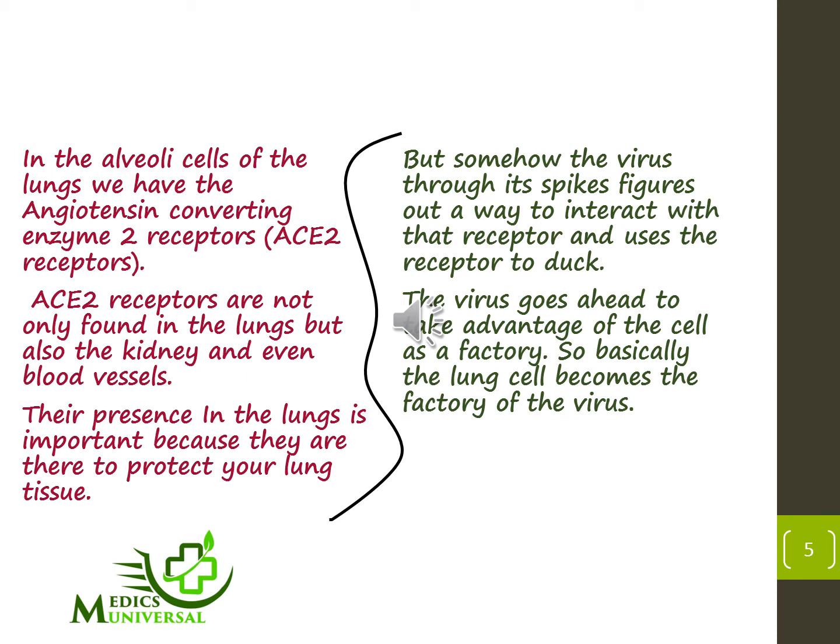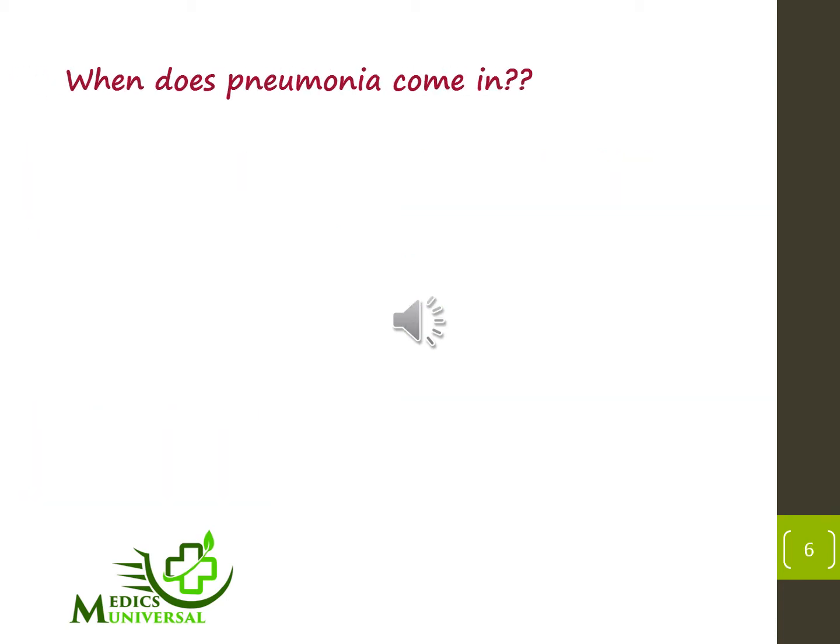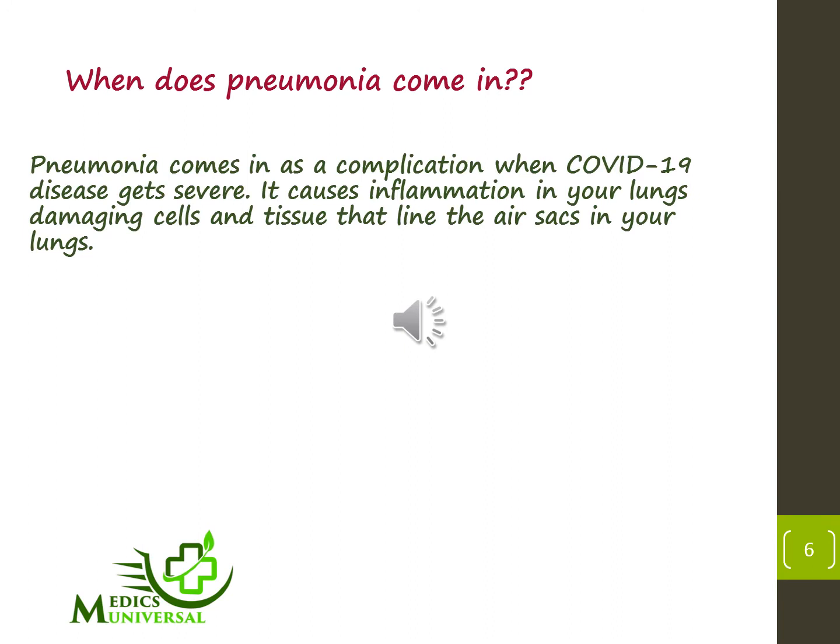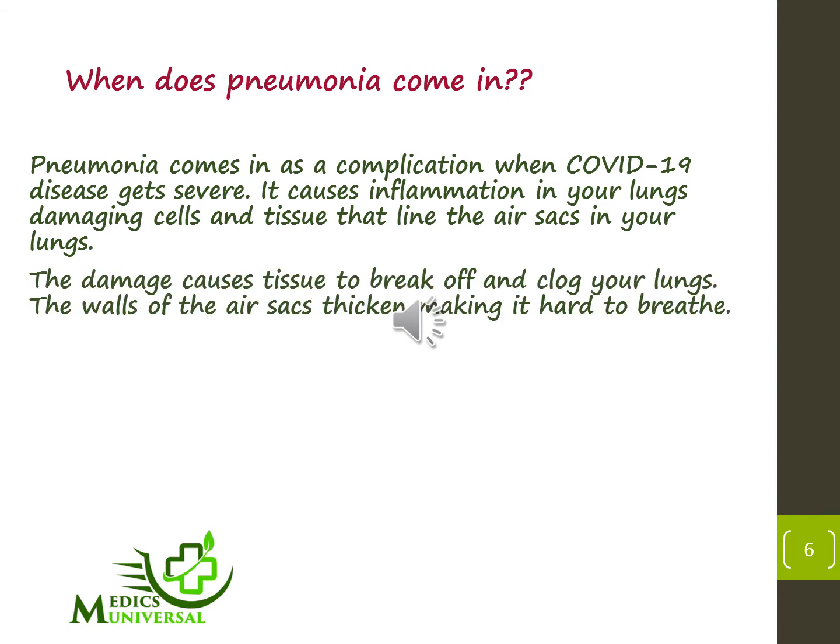The virus then goes ahead and takes advantage of the cell as a factory. Basically, the lung becomes the factory of the virus. Pneumonia comes in as a complication when COVID-19 disease gets severe. It causes inflammation in your lungs, damaging cells and tissue that line the air sacs in your lungs. The damage causes tissue to break off, and by so doing, they clog your lungs.